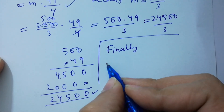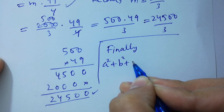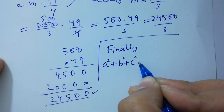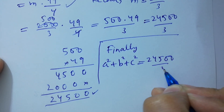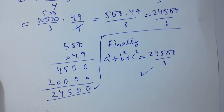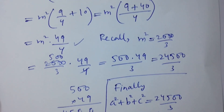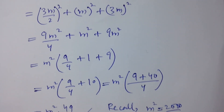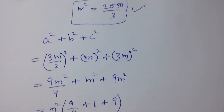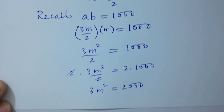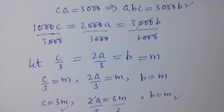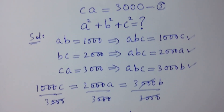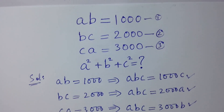A squared plus B squared plus C squared is equal to 24500 over 3. Thanks for watching this video. Please subscribe to this channel to get notifications of my new videos, and don't forget to share these videos with your classmates and friends so that they also benefit. You can also visit the playlist of this channel to learn more. Okay, bye!